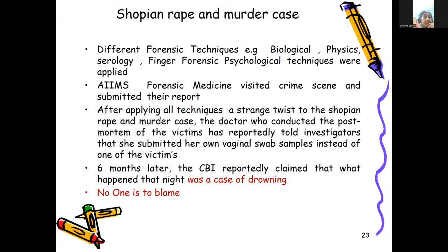Different forensic techniques — biological, physics, serology, fingerprint, and forensic psychological techniques — were applied in the Sofian rape and murder case. AIIMS forensic medicine visited the crime scene and submitted their report. A strange twist was that the doctor who conducted the post-mortem reportedly told investigators that she submitted her own vaginal swab sample instead of one of the victims. Innocent people were unnecessarily jailed. Six months later, CBI claimed what happened was a case of drowning and no one was to blame. On the basis of forensic investigation, innocent people were cleared.